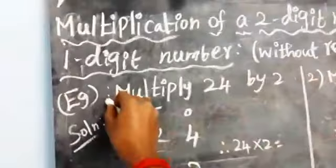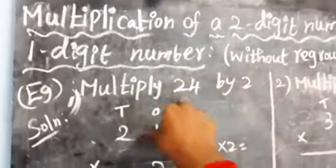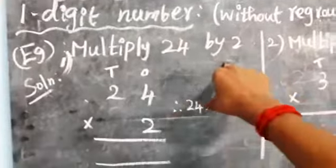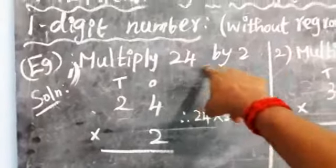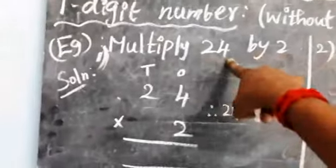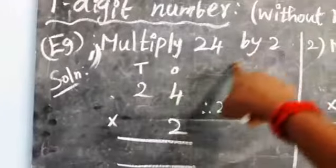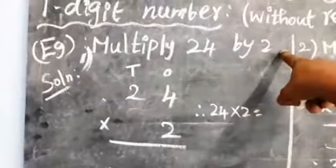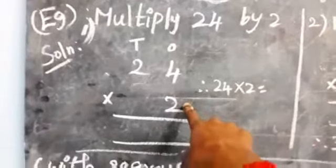Now look at the first sum. Multiply twenty-four by two. Twenty-four is the two-digit number and two is the one-digit number. Here twenty-four — two-four — twenty-four, multiplied by two.